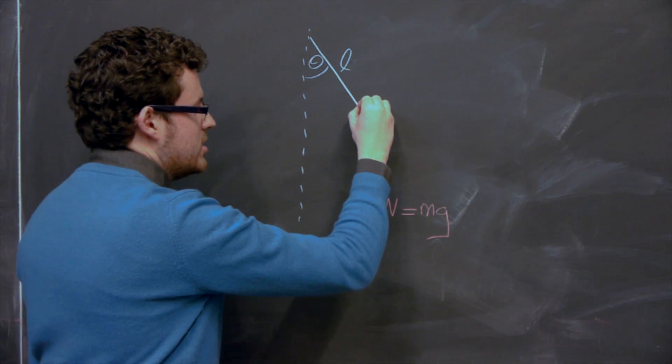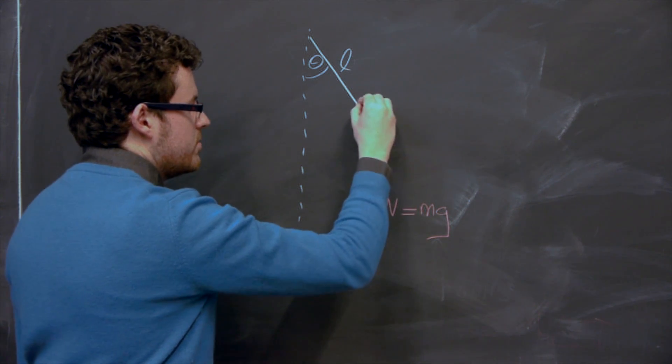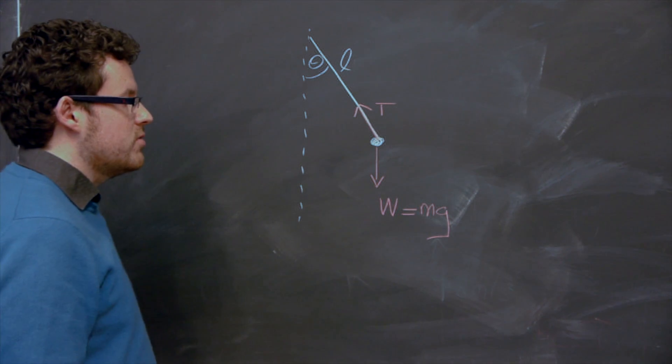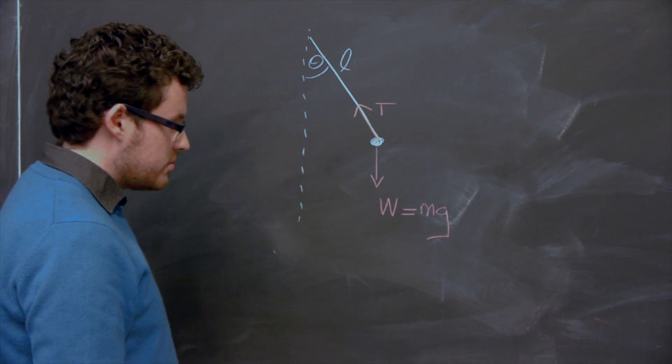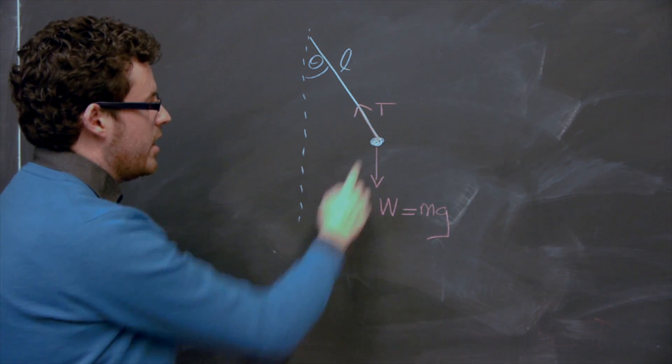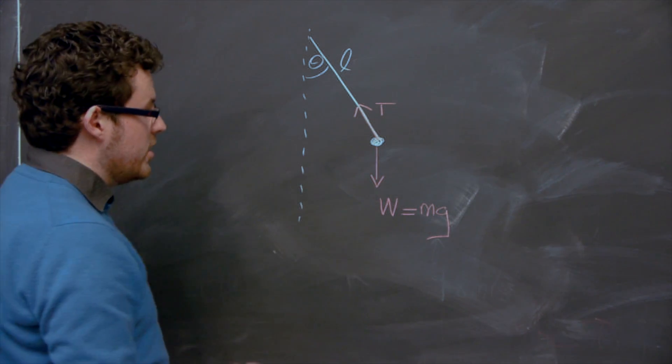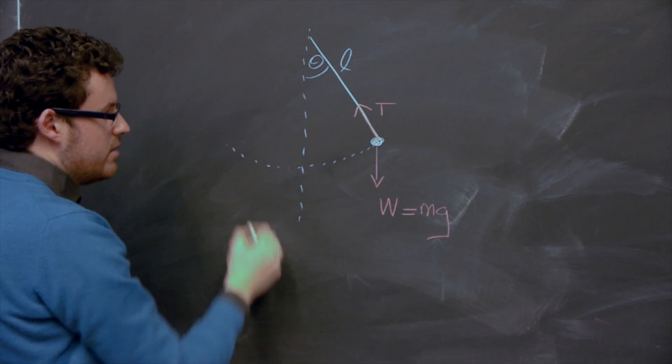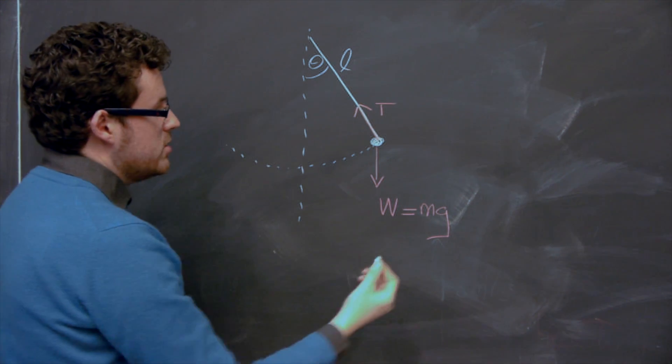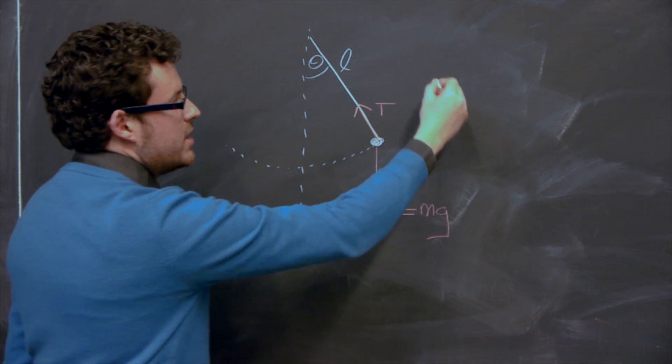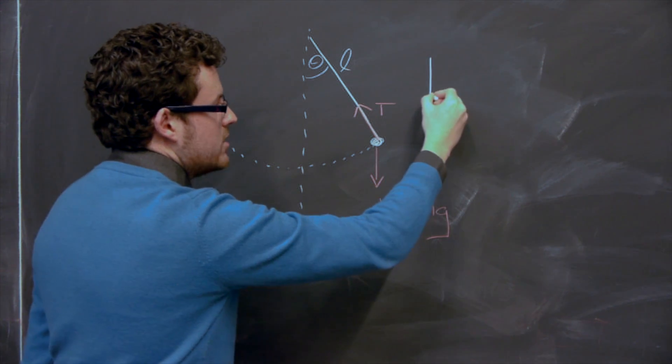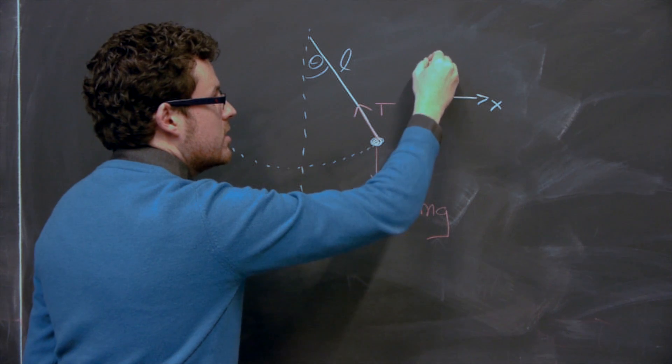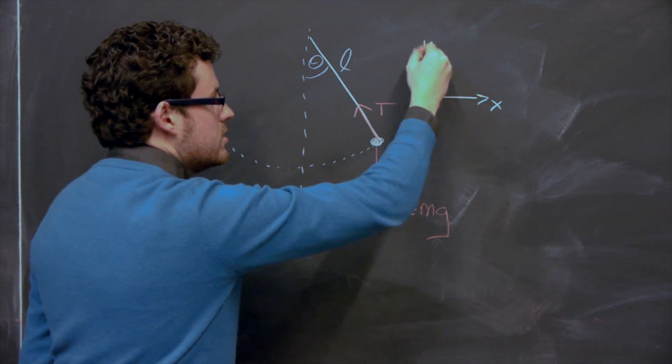And the other force that's acting in this situation here is the tension on the string. And it's given by T. Not to be confused, of course, with the period of the oscillating mass on a string. And as I said, this is free to oscillate around this point. So we also need to consider or break down our system here into x and y components. We define the x-axis to be like that, and this to be the y-axis.